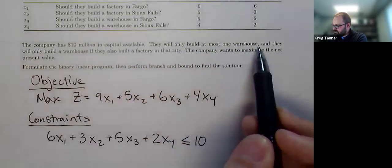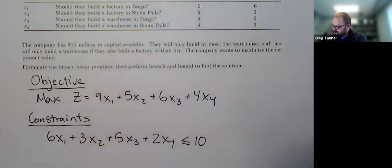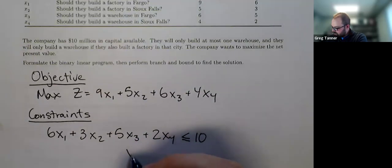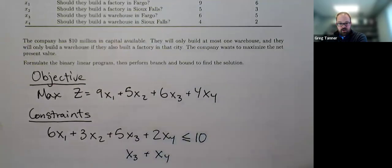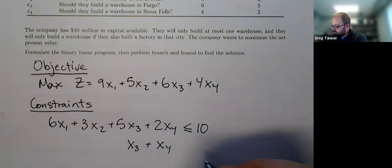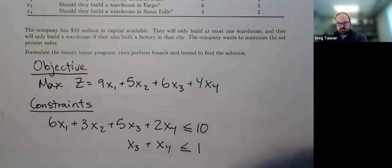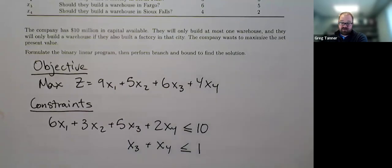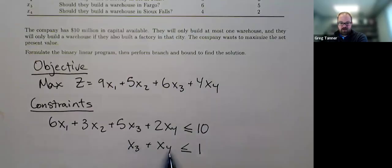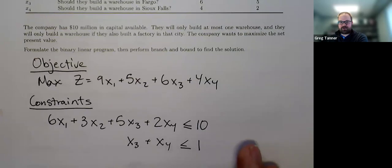The next thing that we see here is that they'll build at most one warehouse. Warehouses are variables x3 and x4. And so we can say x3 + x4 at most one of them. So that's going to be less than or equal to 1. So when we add up these variables, it's telling us essentially how many warehouses are we building. They're both zero, we'll build zero warehouses. We could build one warehouse, but we're not allowed to have both of them be one. And so this is that mutually exclusive option that we talked about in our tips and tricks.